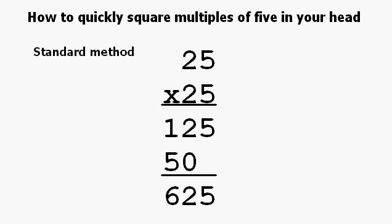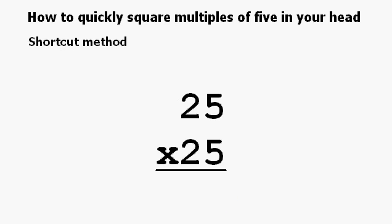Now let's move on to the shortcut. First of all, I'm going to rework the previous problem using this shortcut. We will start with the 5. 5 times 5 is 25, so we'll put the 25 here. Notice I did not carry the number like I did in the standard way.